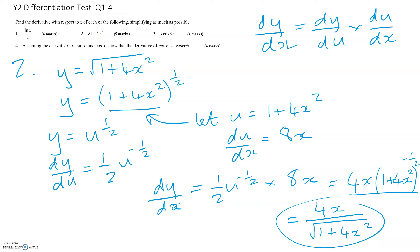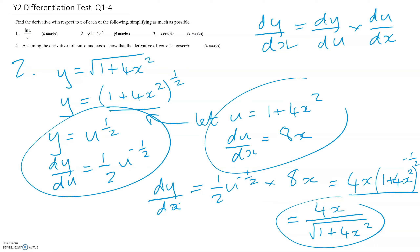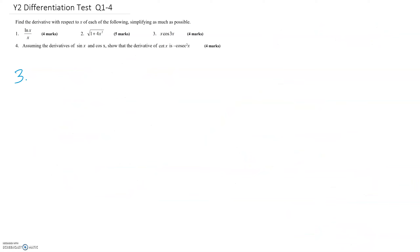There may be a quicker way of doing this, but I would always recommend writing out the chain rule, setting it out clearly, and then multiplying the two results together. For part three, you've got this equation here.